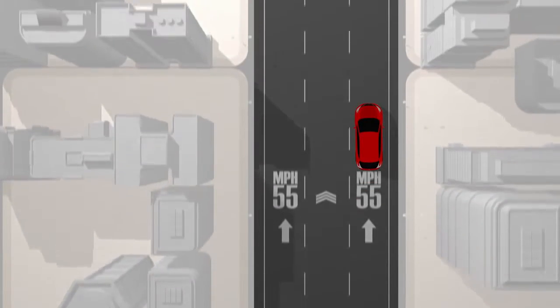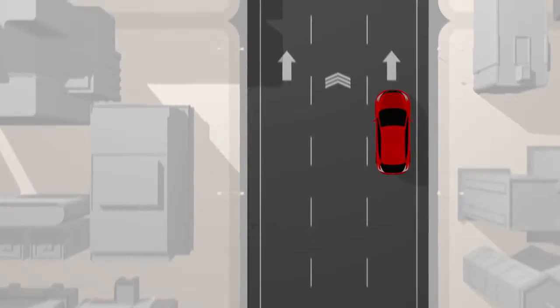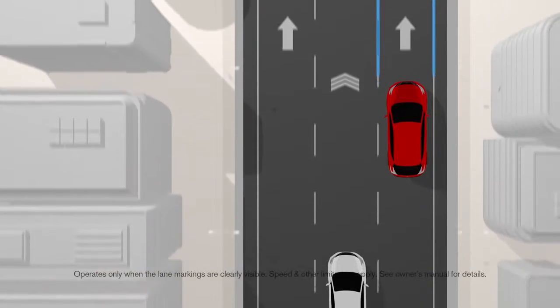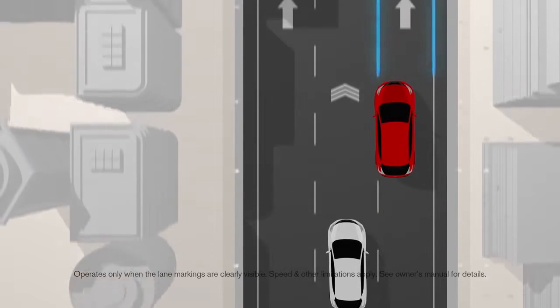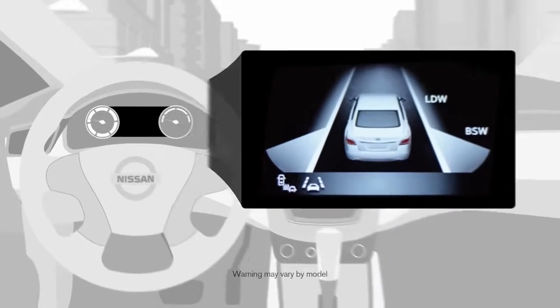Here's a little help to keep you on the straight and narrow. Lane departure warning watches how close you are to the line. And if it detects you drifting over, it flashes a signal and sounds an alert.